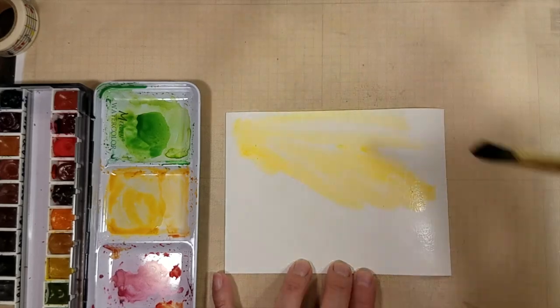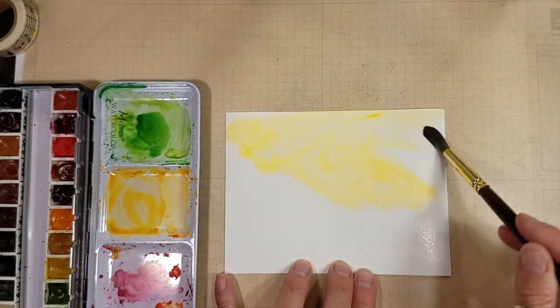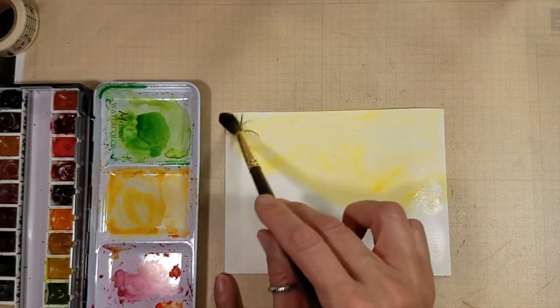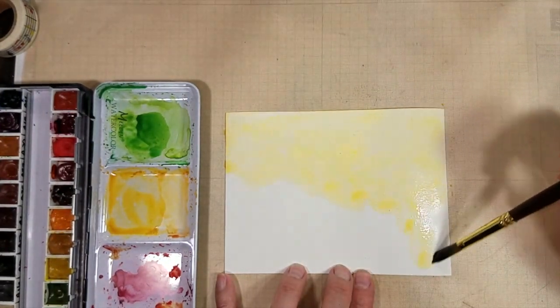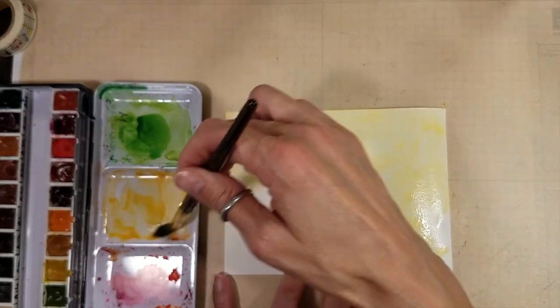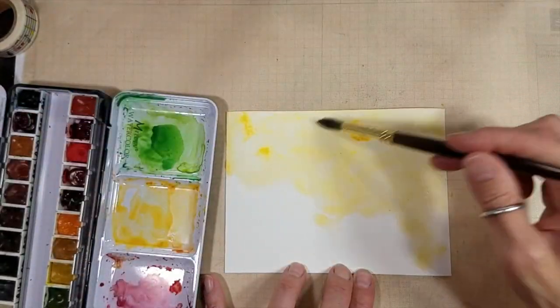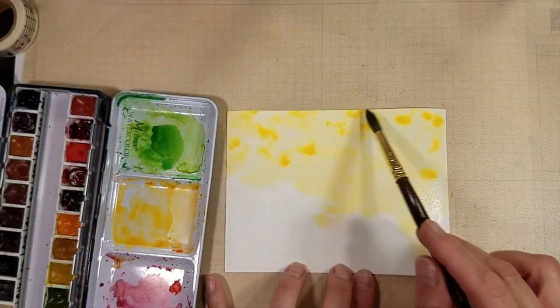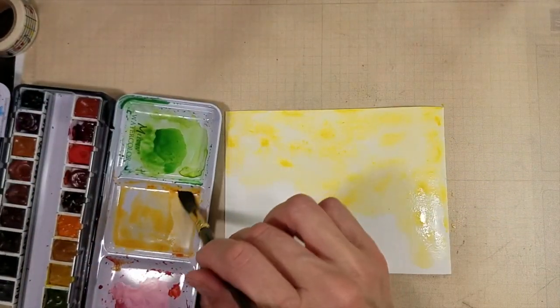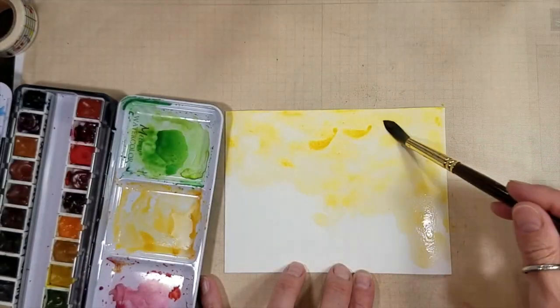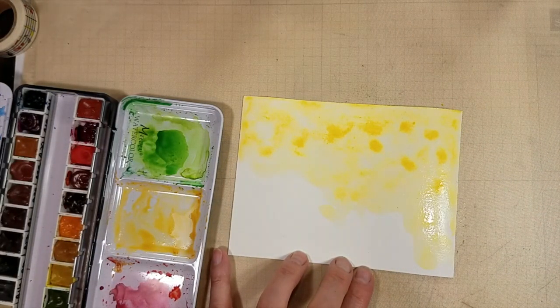And I am doing wet on wet first with some Daniel Smith watercolors. So I used my mop brush to lay down a layer of water on there. And I don't know which yellow this is. It was whatever was in the palette. I just added some water to rehydrate what was already on the palette.